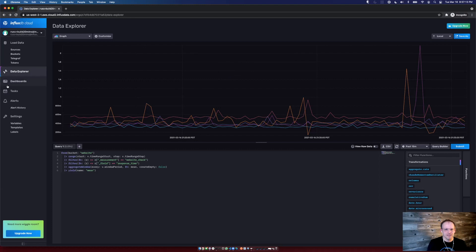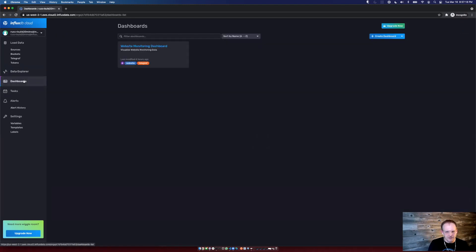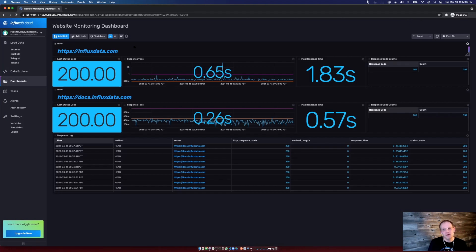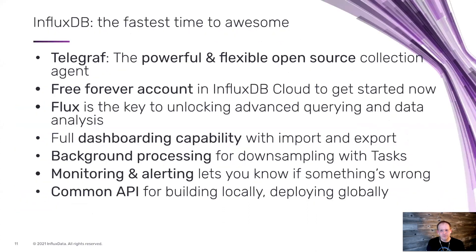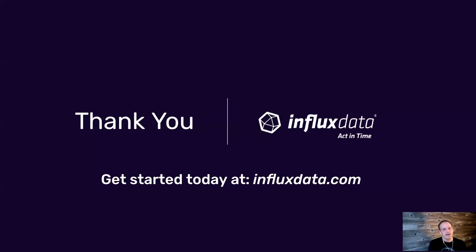I've already created a dashboard to help track my HTTP data, so I can jump over to the dashboarding area of the app and take a look. And there we have it — a simple website monitoring tool built with the InfluxDB Cloud platform. Just to recap: we were able to quickly ingest data via our powerful data collection agent Telegraf, explore that data with just a few clicks to discover trends, and build a dashboard for continuous observability of that web monitoring data. But I've only scratched the surface — you can run queries as background tasks for data enrichment, build complex alerting functionality, and connect it to your favorite tools like Slack and PagerDuty. All of these capabilities are available via a common API that allows you to build custom applications and scale globally with less code and more power. Thank you for watching, and get started for free today at influxdata.com.